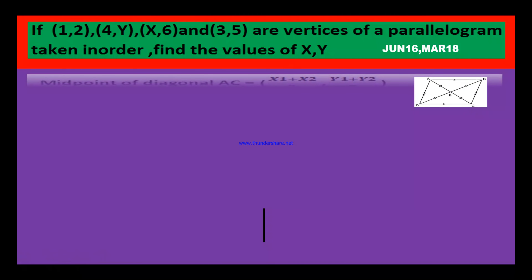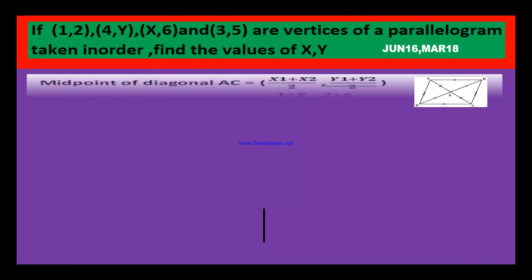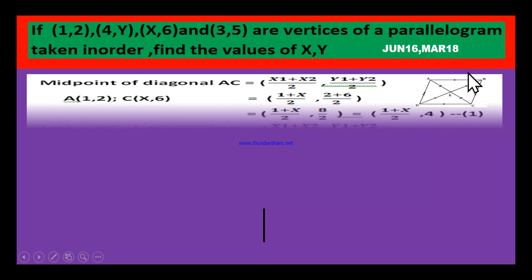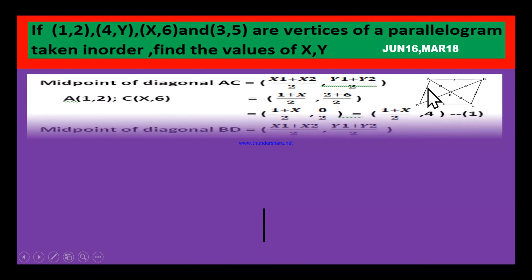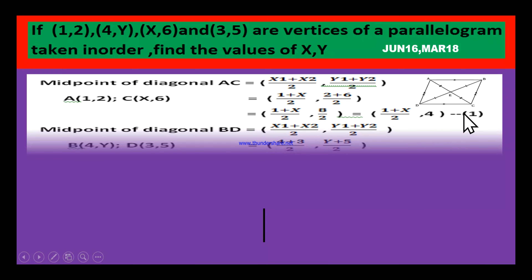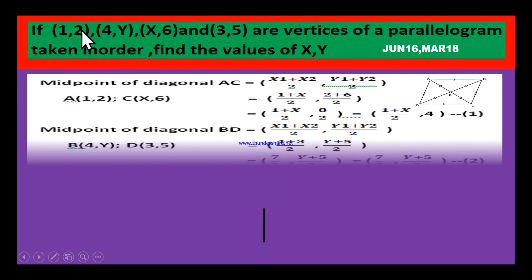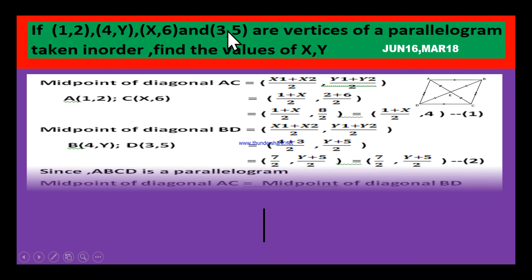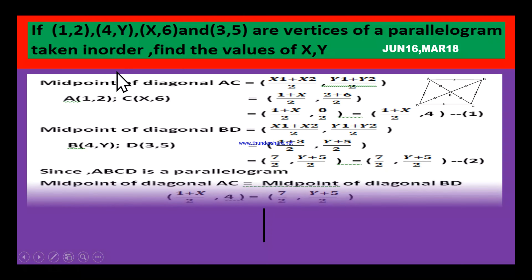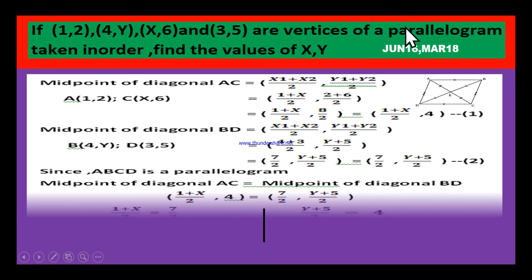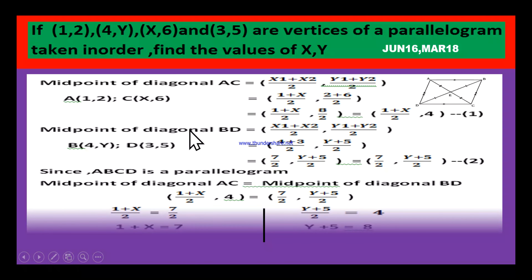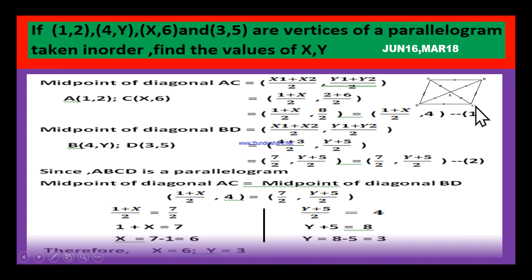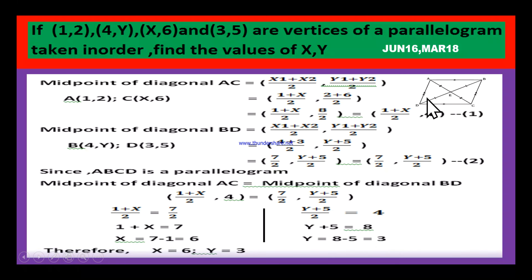If you observe this diagram, we have given 4 points A, B, C, D — these are the vertices of the parallelogram. Let us assume the first point is A, second is B, third is C, and fourth vertex is D. As you know, in a parallelogram the diagonals bisect each other. Let us find the midpoint of diagonal AC and the midpoint of diagonal BD.